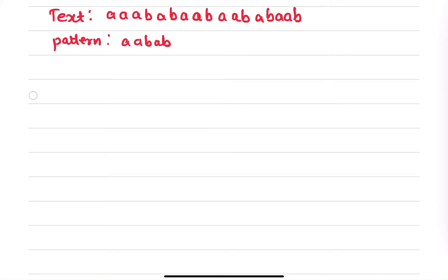Let us take a complete example on the Finite Automata matching algorithm. The text given to us is 'aaabababaabab' and the pattern given to us is 'aabab'. For finite automata string matching, we first create a transition table and make an automata from that. If our text given as input to that automata reaches a final state, we say that the pattern is in the text. To make a transition table, the basic step is to create a rough automata for the given pattern.